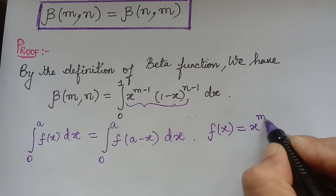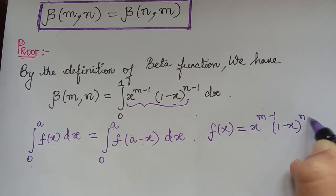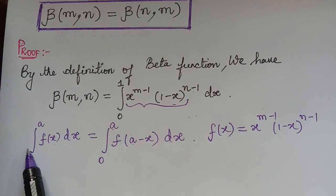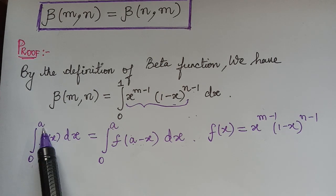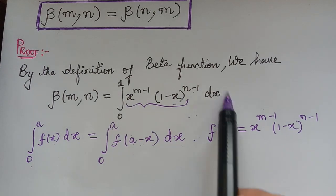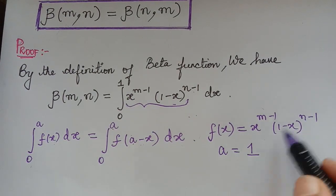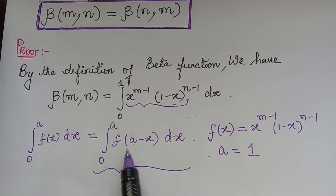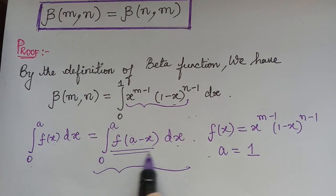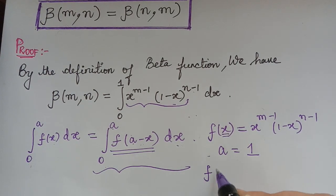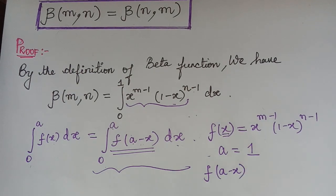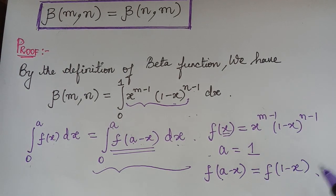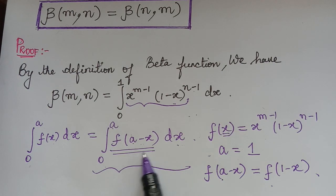So f of x is x to the power m minus 1, multiplied with 1 minus x to the power n minus 1. If we observe, the upper limit is 1, so comparing with the integral 0 to a, the value of a is equal to 1 for this beta function. Now we have to substitute and find the integral 0 to a of f of a minus x dx, for which we need f of a minus x — that is f of 1 minus x, since a equals 1.